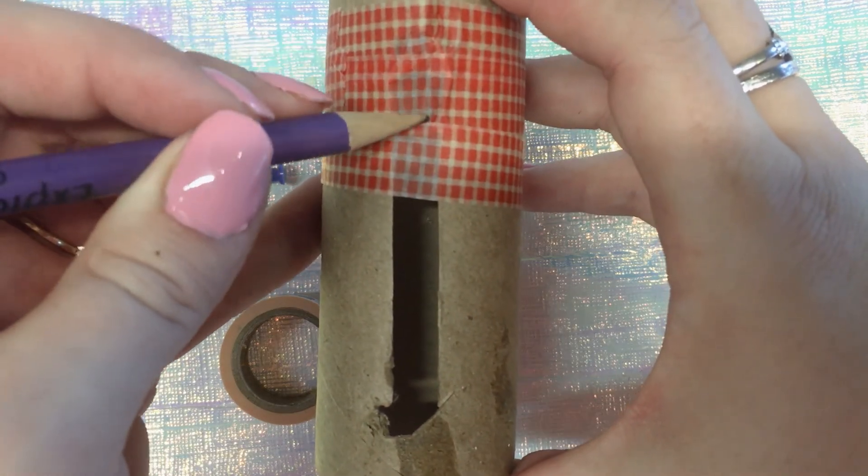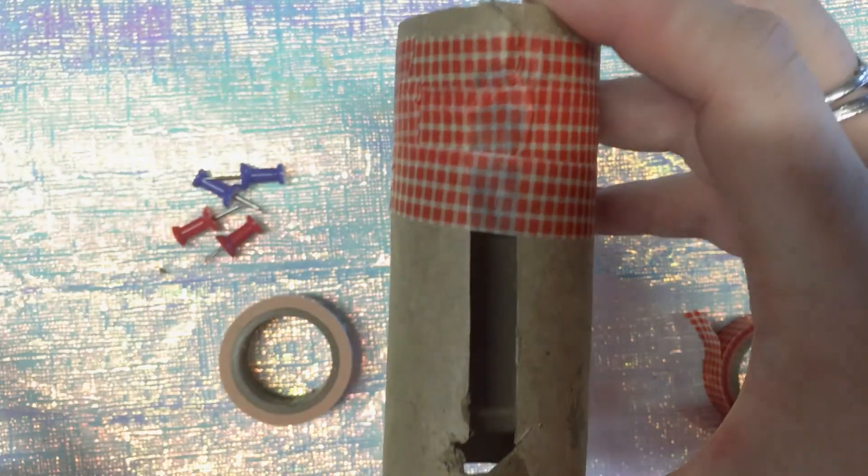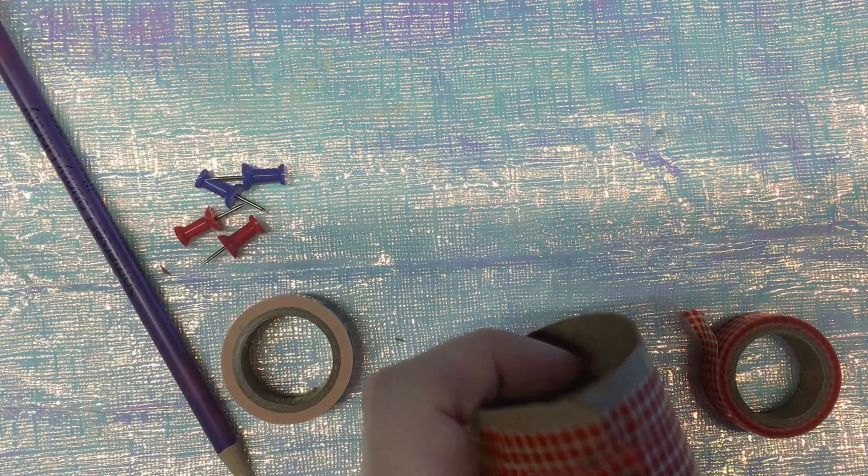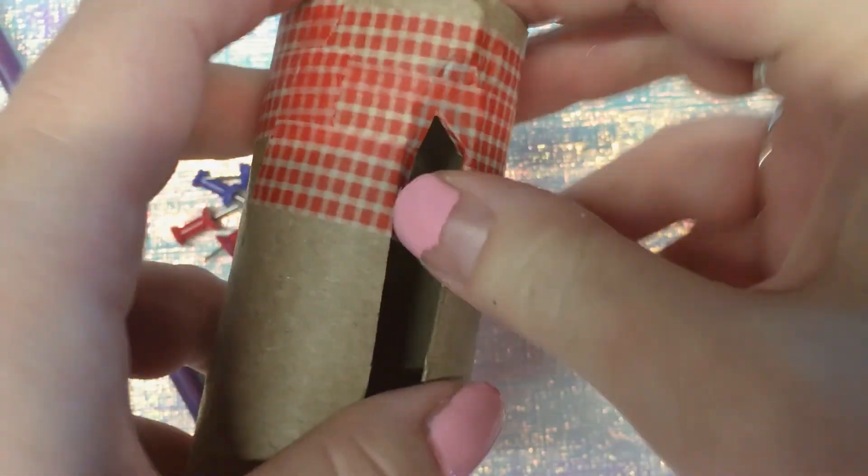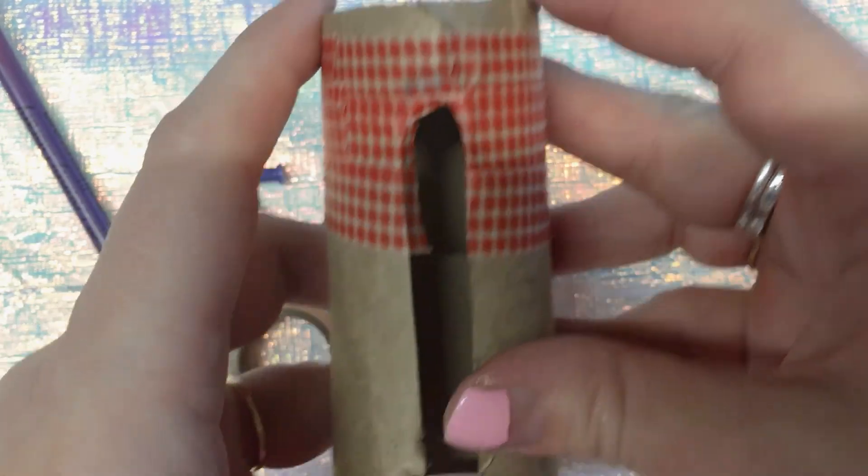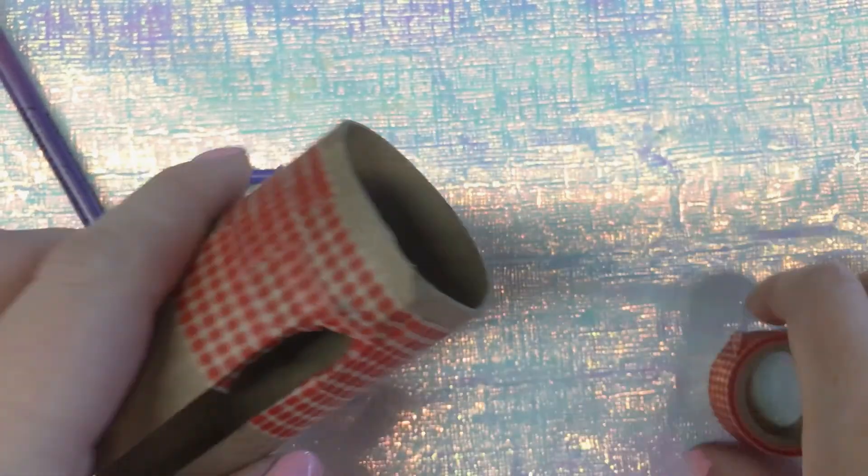You're going to draw a line down the middle and then cut the middle section so you can fold that on the inside like that. Once you've done that through the whole thing.